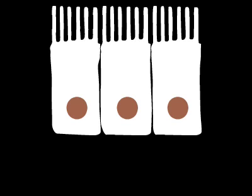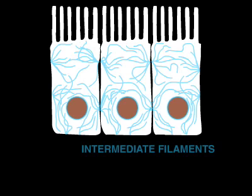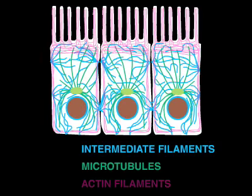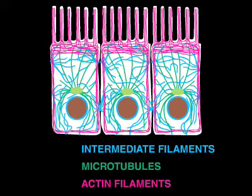Eukaryotic cells contain a complex network of filaments—intermediate filaments, microtubules, and actin filaments—that provide the cells with strength, structure, and movement.